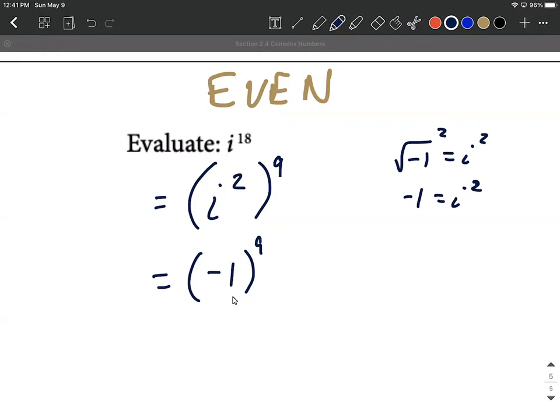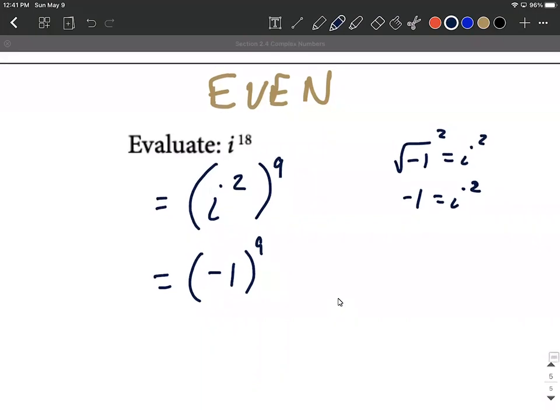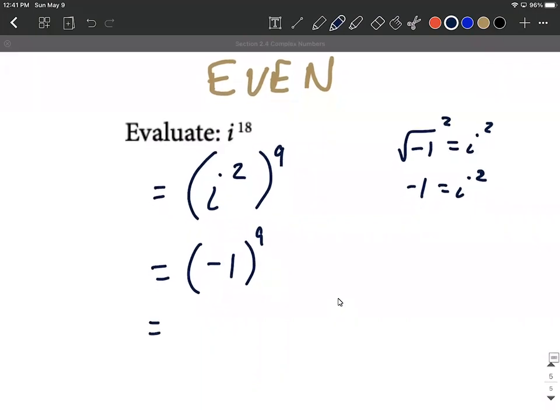Thinking about just negative one multiplied together however many times, based on this exponent, it's going to tell us whether it's going to be positive or negative. Okay, in this case we have an odd number of negatives multiplied together, right? Nine copies of negative ones next to each other multiplied together. So when you have an odd number of negatives, it's going to turn out being negative. So in this case it turns out being negative one.